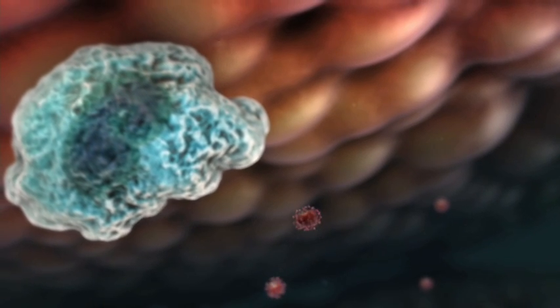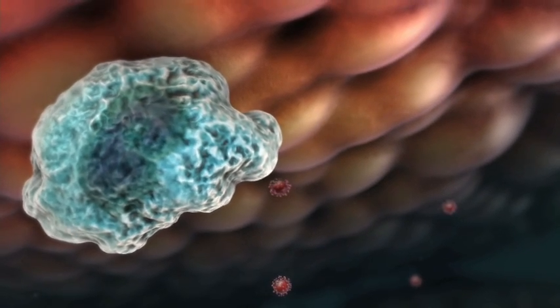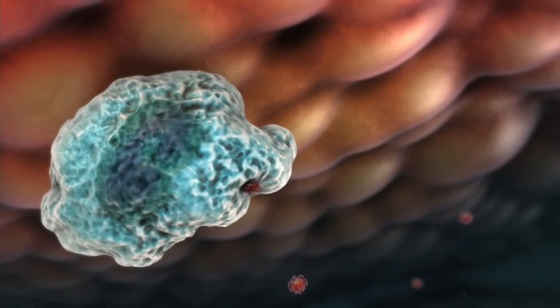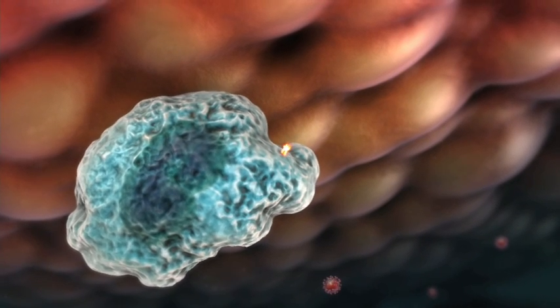The invader draws the attention of the immune system's frontline troops. Dendritic cells, or macrophages, capture the virus and display pieces of it.